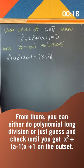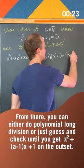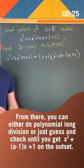From there you can either do polynomial long division or just guess and check until you get (x² + (a-1)x + 1) times (x+1) on the outside.